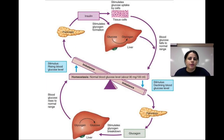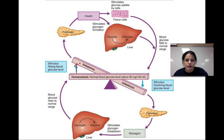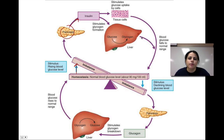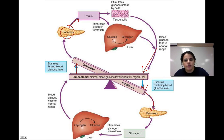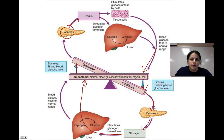Negative feedback also happens with your blood glucose. If you are hyperglycemic — too much sugar in your blood — your pancreas as the control center sends out insulin to bring it back down to normal. But if you're hypoglycemic, the signal is received by your pancreas, which sends out a hormone called glucagon, putting sugar back into your bloodstream to raise your blood sugar back to normal. That's another example of a negative feedback mechanism.